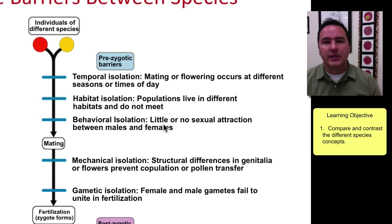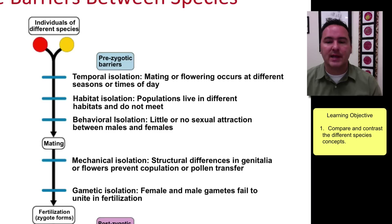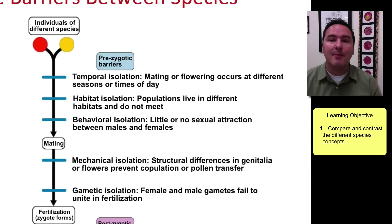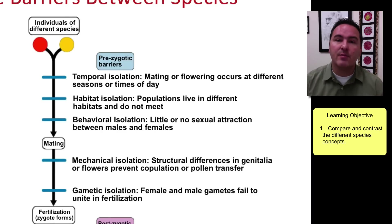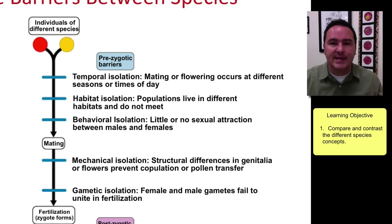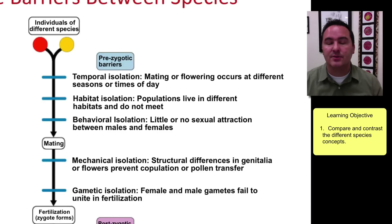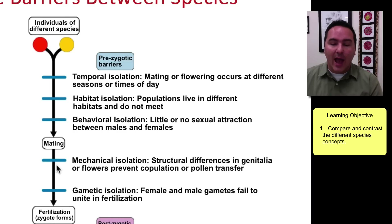Behavioral isolation is where there's simply no attraction between two individuals. In insects this is common — many insects use pheromones, a chemical emitted typically by the female, and the male uses its antennae to home in on that chemical to find her. If the male is not attracted to the particular pheromone, it does not search out the female to mate.